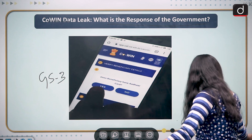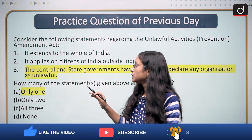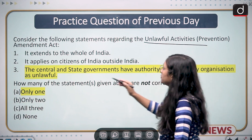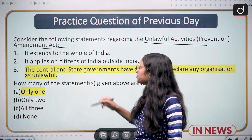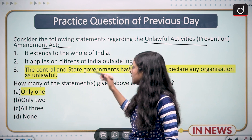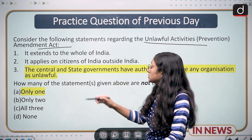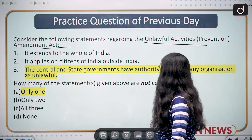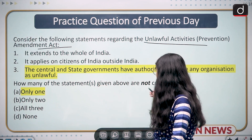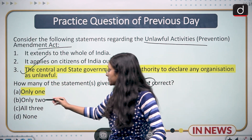Moving to the news part, before moving to the points of discussion, first of all we will discuss the previous day question. The previous day question is related to the Unlawful Activities Prevention Amendment Act, also known as UAPA. The first statement is it extends to the whole of India; second is it applies on citizens of India outside India; third is the central and state governments have authority to declare any organization as unlawful. They are asking which statement is not correct — only the third statement is not correct, hence your answer is A, only one.